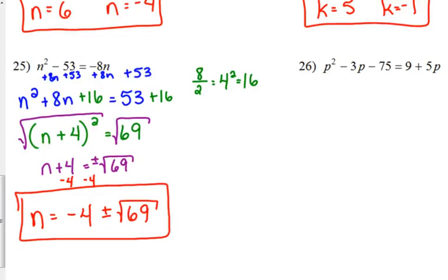Alright, let's look at 26. P squared minus 3P minus 75 is equal to 9 plus 5P. So, again, we've got a little bit of moving to do. Our linear terms need to be on the same side. So, subtract the 5P. The constant needs to be on the opposite side. So, add the 75. So, we have P squared minus 8P, leave yourself some space, is equal to 84. 9 plus 75 is 84.